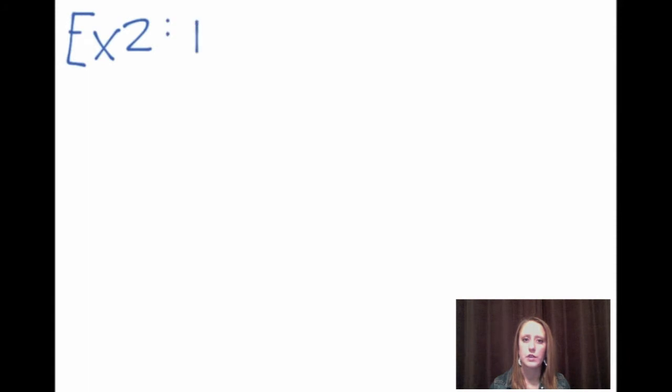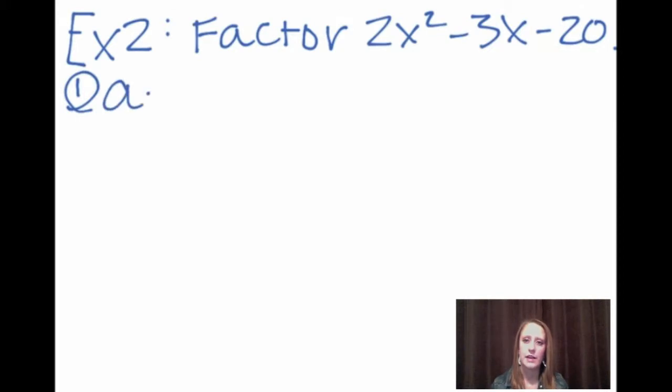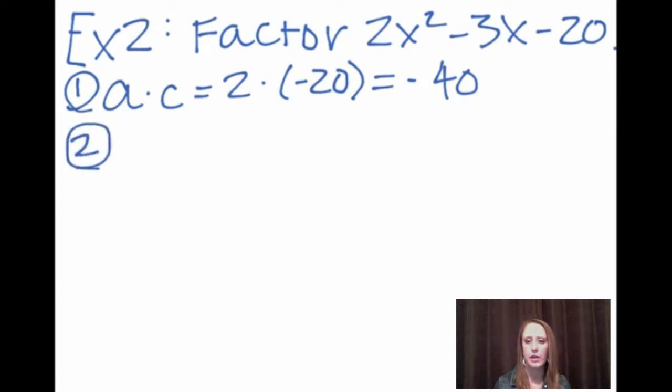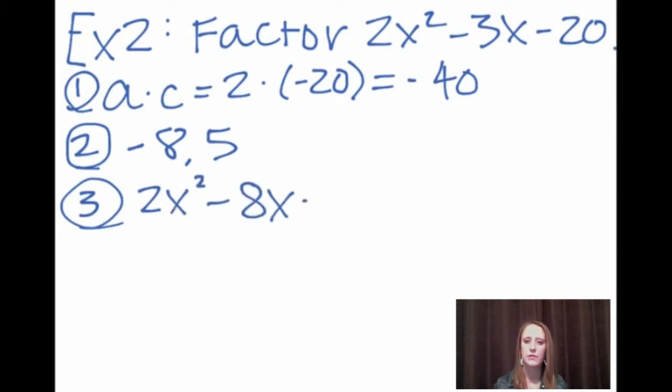Now we are going to move on to another example and we are now going to factor 2x squared minus 3x minus 20. So step one, we take a times c and that is 2 times negative 20 and that gives us negative 40. Step two, we need to find the two numbers that multiply to negative 40 and add up to negative 3. So in this case, those two numbers would be negative 8 and 5. For step three, we use those two numbers to rewrite the middle term. Our expression then becomes 2x squared minus 8x plus 5x minus 20.